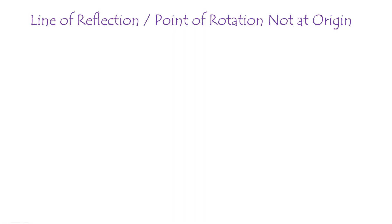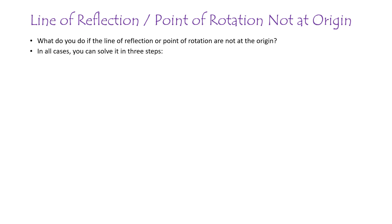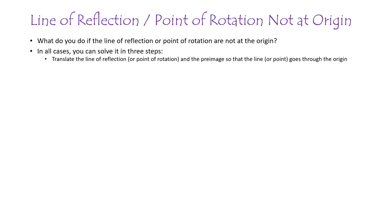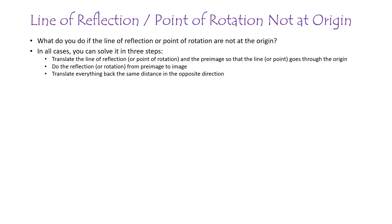The last subject is what to do if the line of reflection or point of rotation is not at the origin. In all cases, you can always do three steps: first, translate the line of reflection or point of rotation and the pre-image so that the line of reflection or point of rotation goes through the origin. Then do the reflection or rotation to get from pre-image to image. Then translate everything back the same distance in the opposite direction.